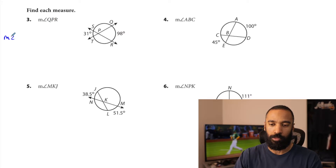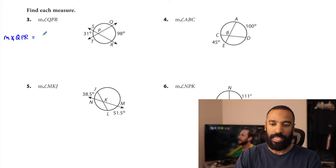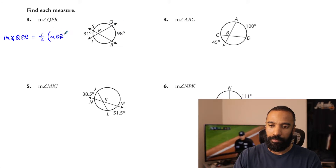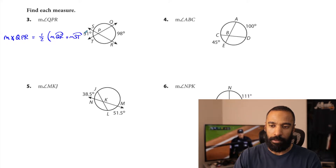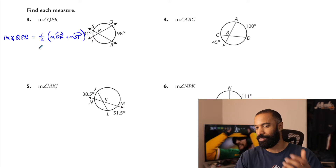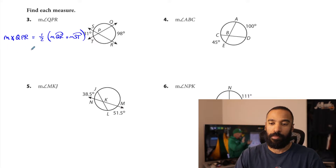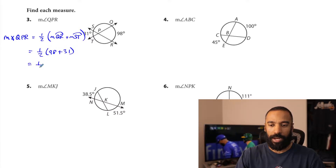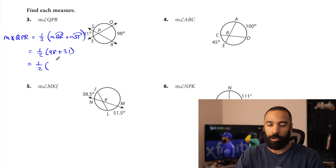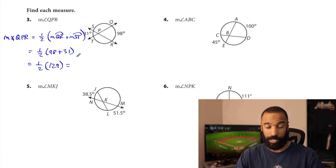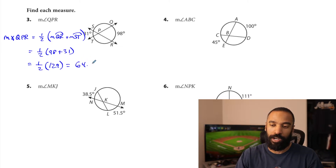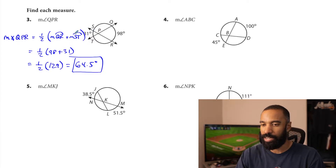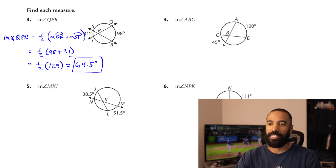The measure of angle QPR — the thing that we do not know — equals half the measure of arc QR plus the measure of arc ST. This is a bit of a formula. So the measure of that angle will be half of 98 plus 31. Half of 129, which is 129 over 2, which is 64.5 degrees. And that's just the first problem of the day.